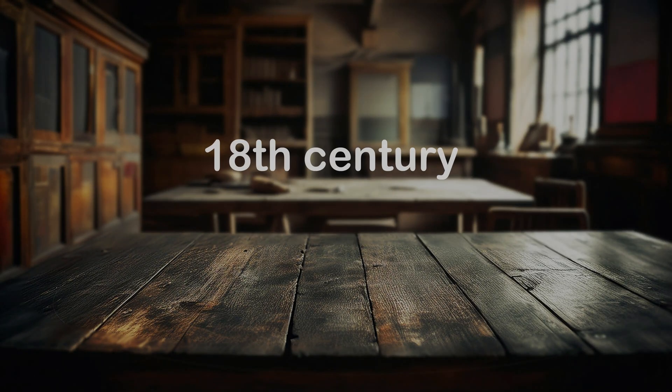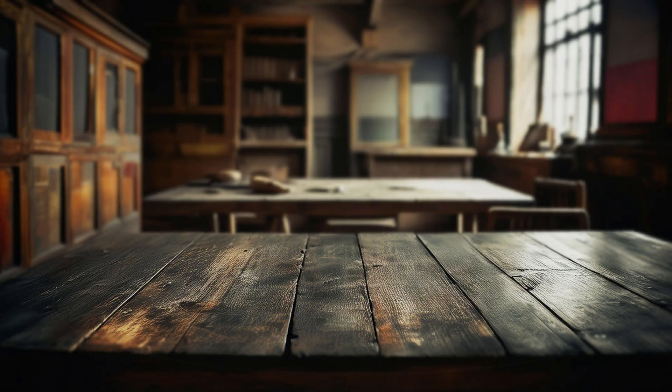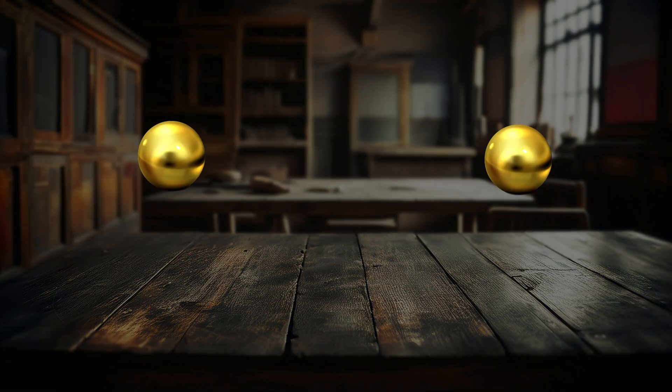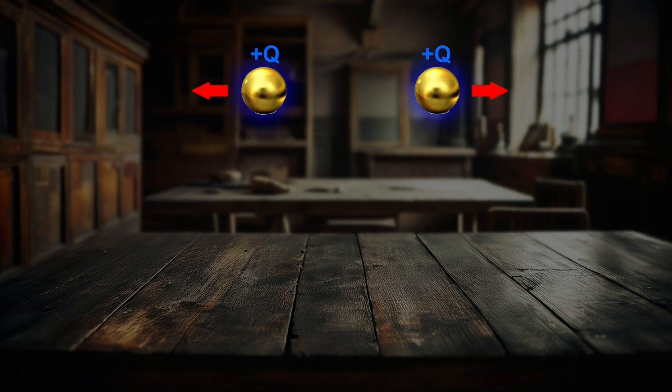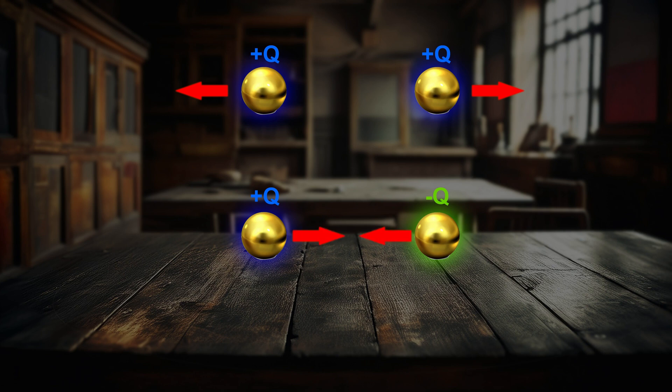Imagine you are in a lab in the 18th century and you are a scientist trying to figure out electricity. You already know that objects can have positive or negative static electricity, which we'll refer to as positive or negative charge. Two bodies with the same charge repel each other, and two oppositely charged bodies attract each other. You are a physicist and you want to make a law out of this.